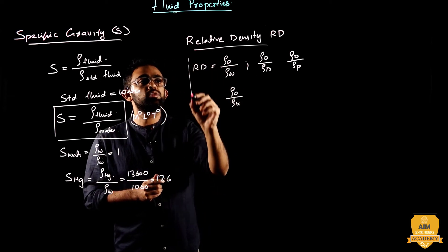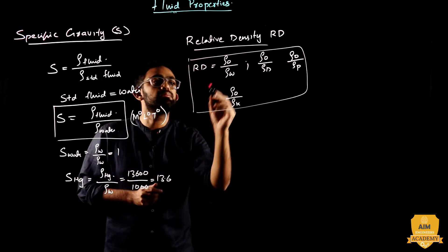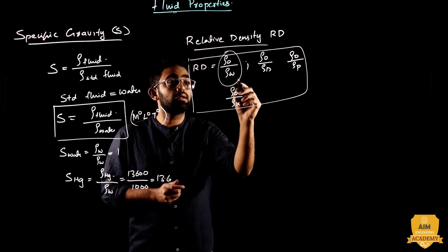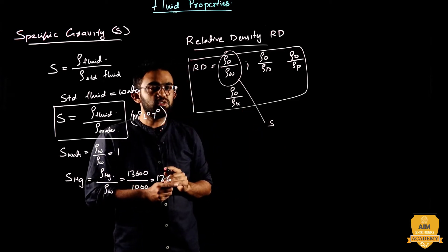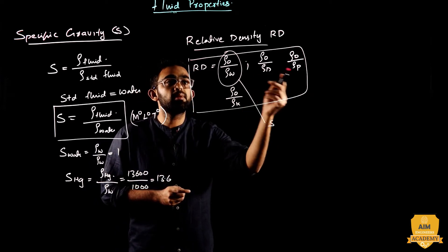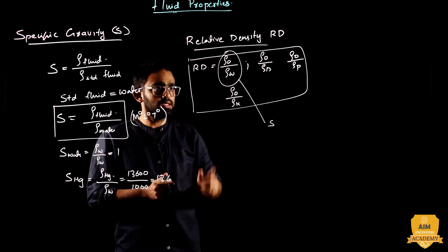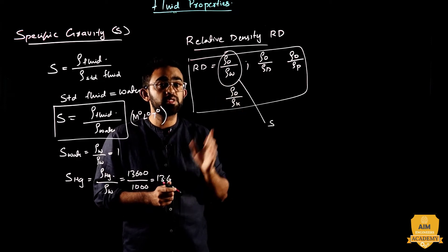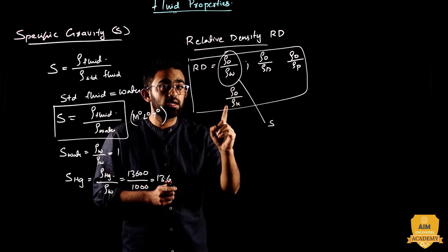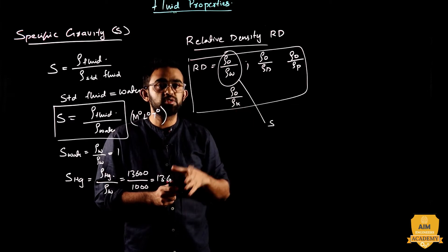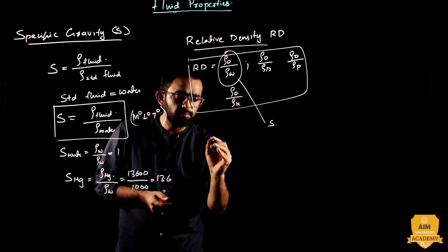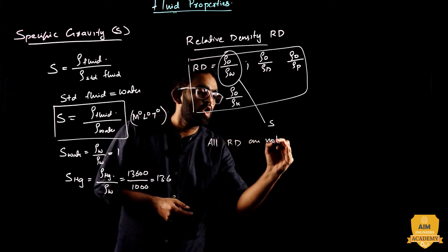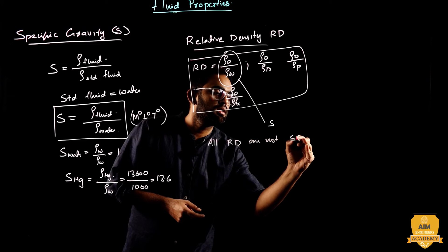These terms are defined as related density, but these terms are also specific gravity. All related densities are not specific gravity — that is point number one. All relative densities are not specific gravity.